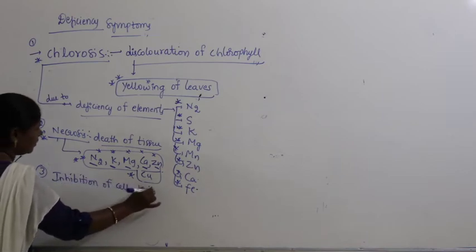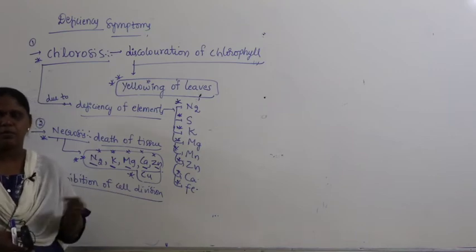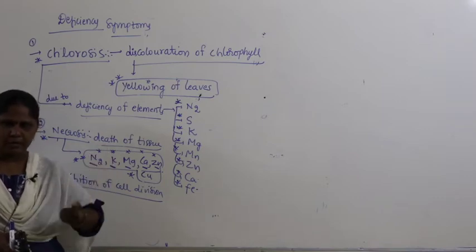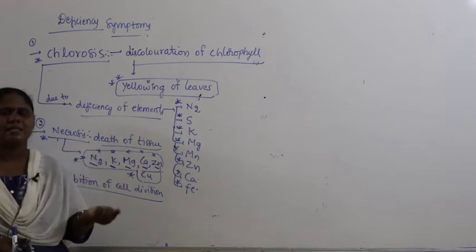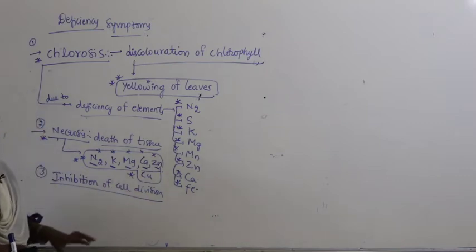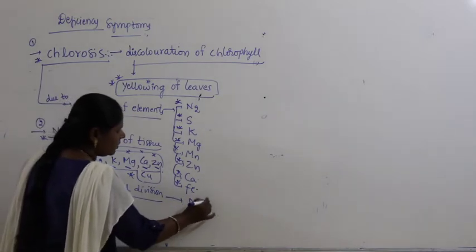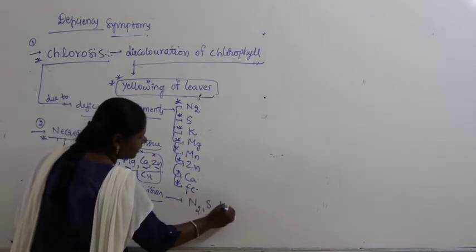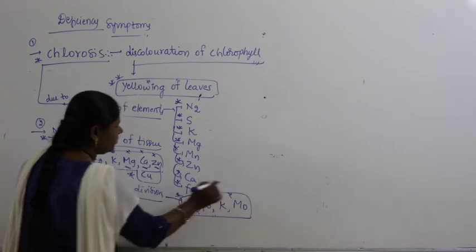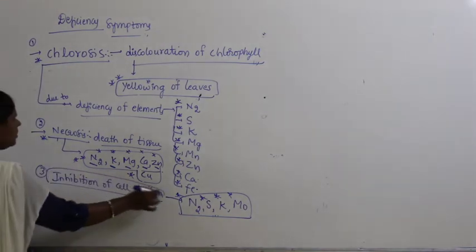There may also be inhibition of cell division. Growing parts like the shoot apical meristem and root apical meristem need cells to divide for growth, but due to deficiency of some elements, cell division is inhibited and growth stops. Inhibition of cell division is due to deficiency of nitrogen, sulfur, potassium, and molybdenum.